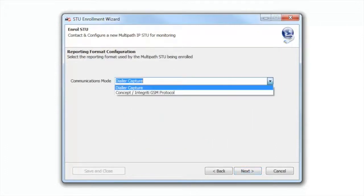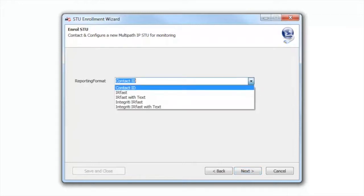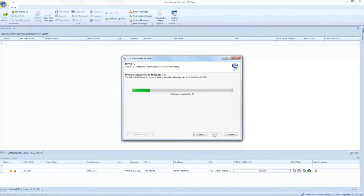Select the communications mode. For this installation, we are using dialer capture. Select the reporting format. We are using Contact ID for this installation. The T4000 is also capable of reporting IR Fast with preview text to the central station. The system is now programming the T4000. Once complete, click the finish button to finalize enrollment.